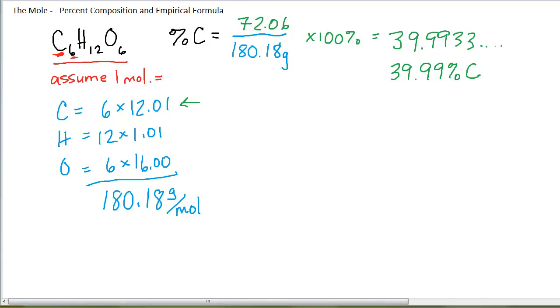We could go through the same procedure and calculate the percent by mass of hydrogen. The percent hydrogen is the part that's hydrogen over the whole amount. The whole amount is still going to be 180.18 grams. The amount that is hydrogen, I have 12 hydrogens at 1.01.